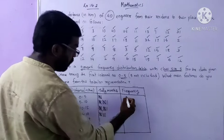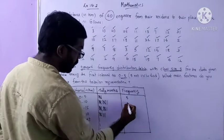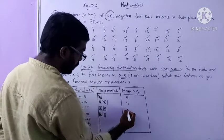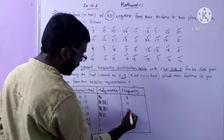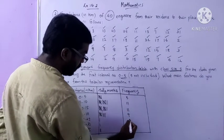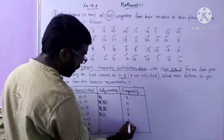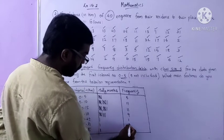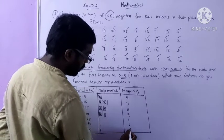The frequency counts for each interval are: 0–5 has 5; 5–10 has 11; 10–15 has 11; 15–20 has 9; 20–25 has 1; 25–30 has 1; 30–35 has 2. This is the Grouped Frequency Distribution Table.